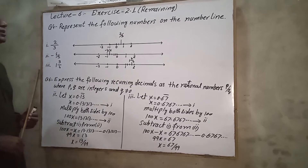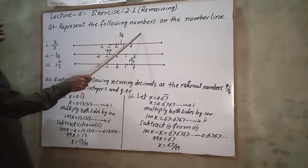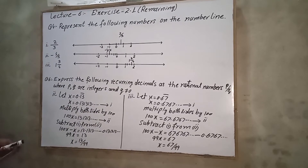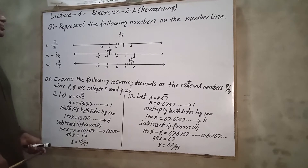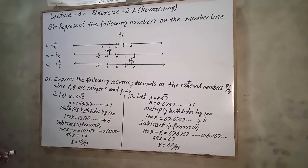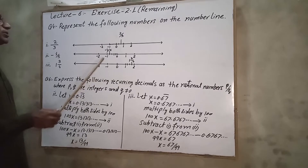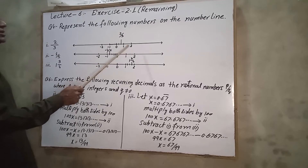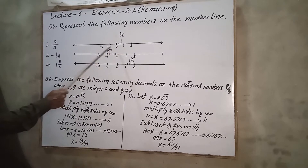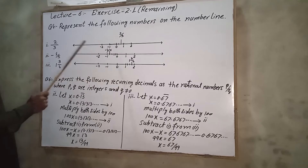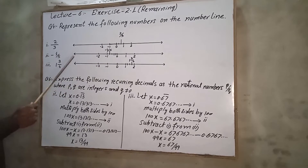In question number 4, we are asked to represent the following numbers on the number line. You have studied the number line in junior classes. We show numbers on the number line — the right side is positive numbers, the left side is negative numbers, and in the center is zero. According to the situation, you can extend it in either direction.